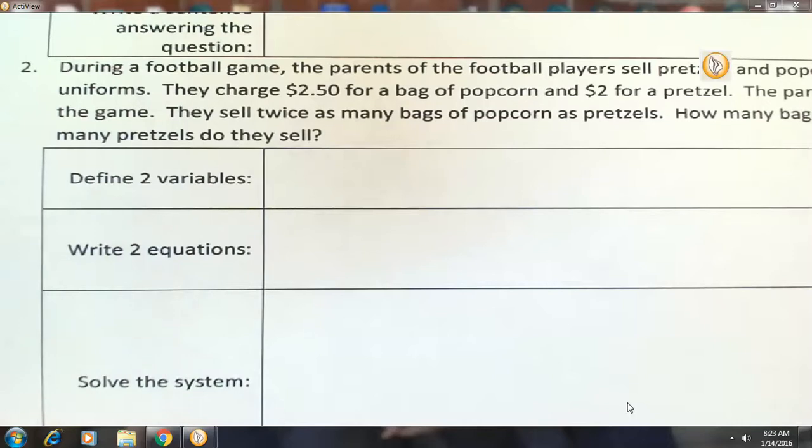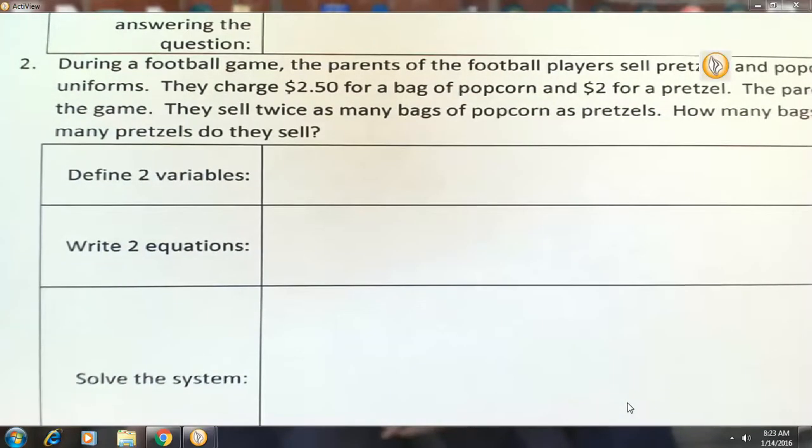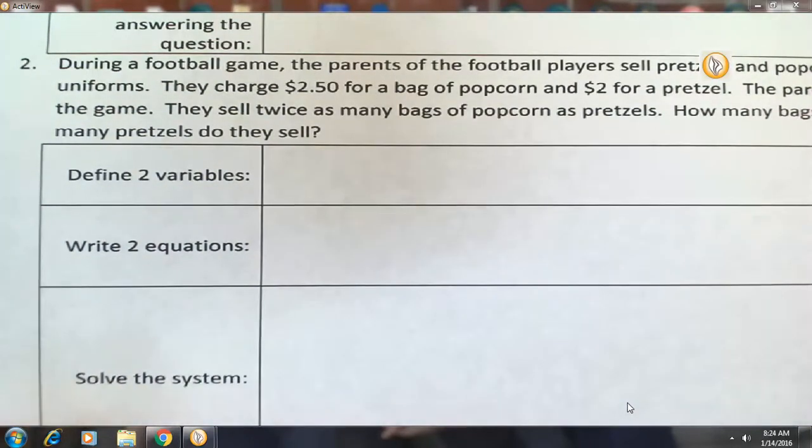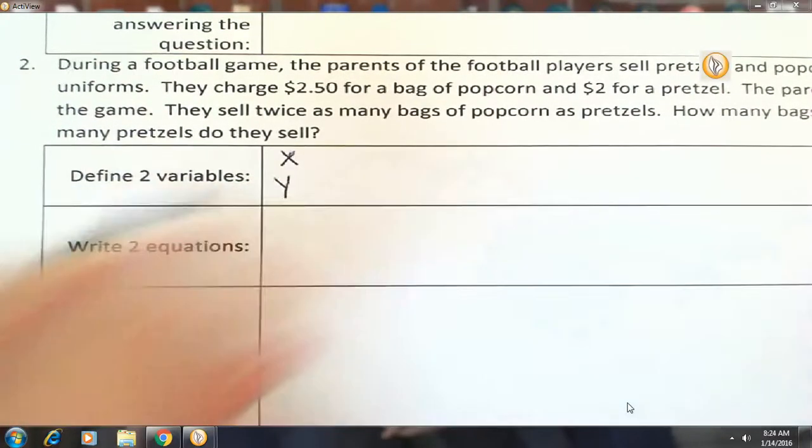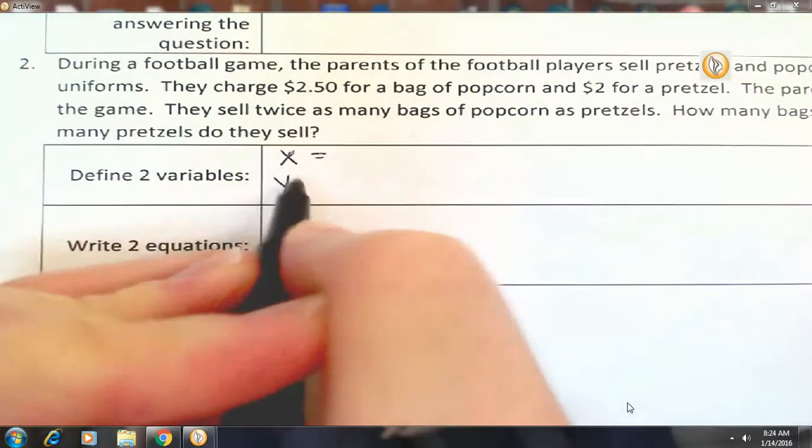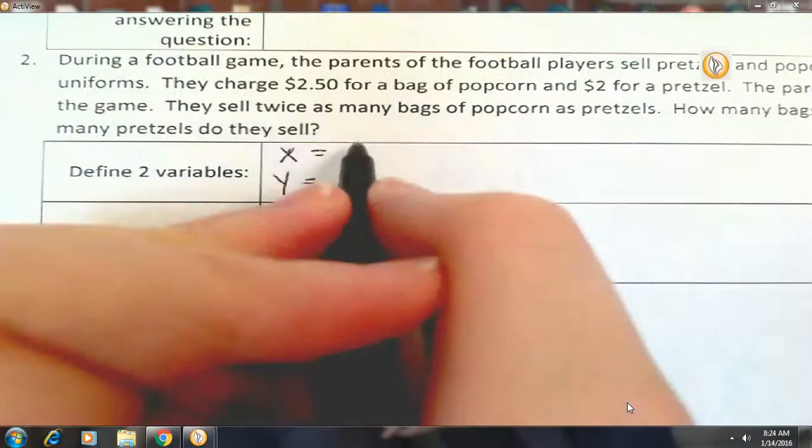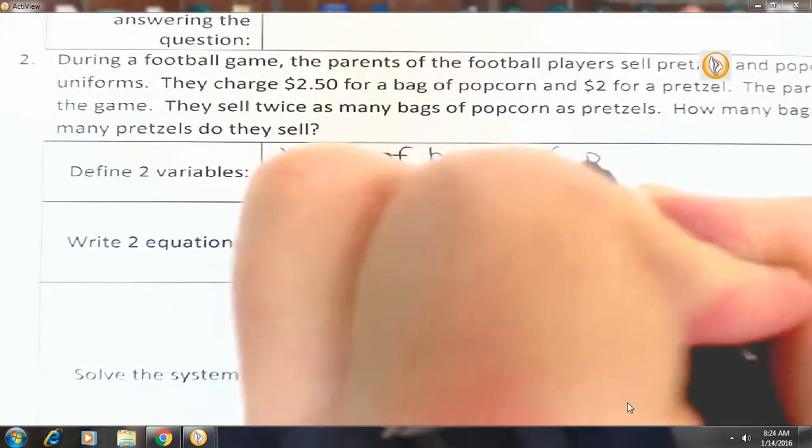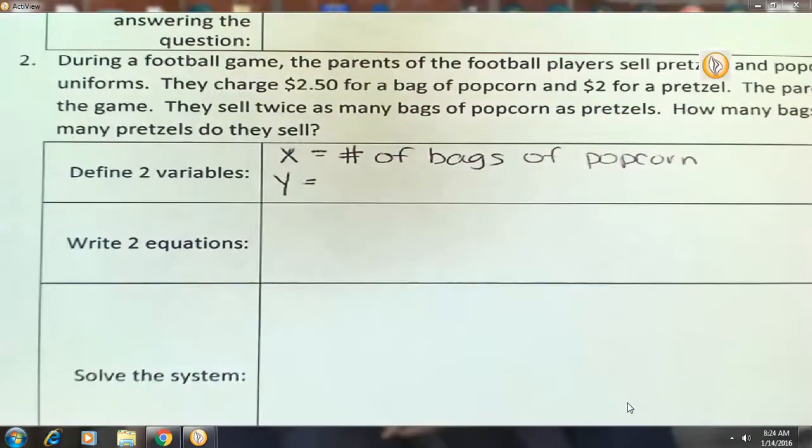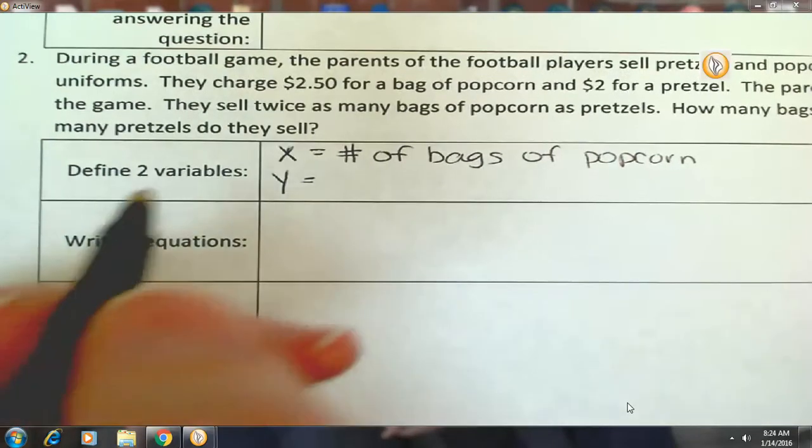So, the first thing to do is define our variables. What are the two things we don't know? How many bags of popcorn and pretzels? And the number of pretzels. You got it. Bags of popcorn and pretzels. I'm going to use X and Y here. You can use whatever you want. I'm going to use X to be the number of bags of popcorn. Please be specific when you're defining your variables. Don't just put popcorn, pretzels. Because are you talking about the cost? Are you talking about the number? I'm going to be specific when I'm grading, so I need you to be specific, too, when you're labeling. Y is going to be the number of pretzels.